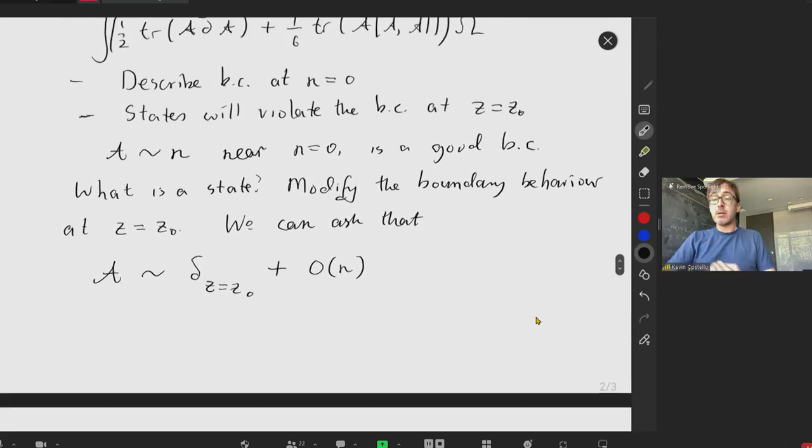So in a moment, I want to match, I will match these with the states in the chiral algebra. But for now, well, if one plays ordinary AdS-CFT, he might say, well, what you really want is a solution to the equations of motion on the bulk geometry, which satisfies this boundary condition.